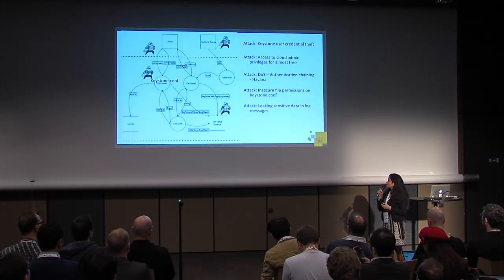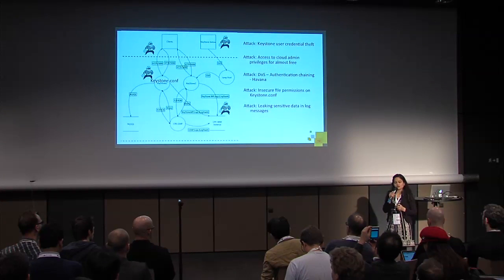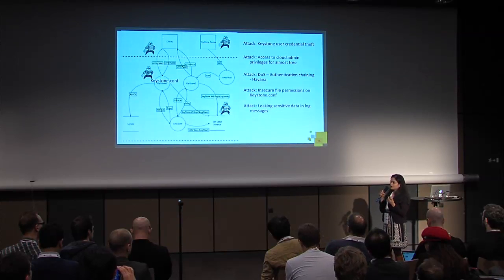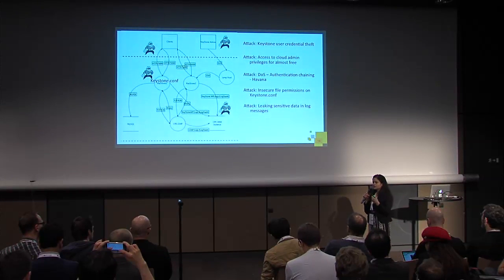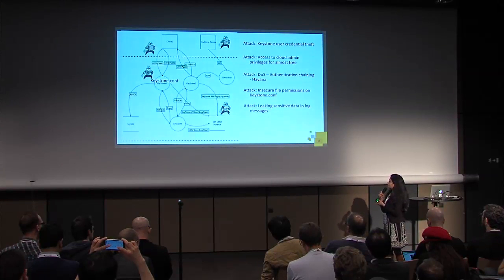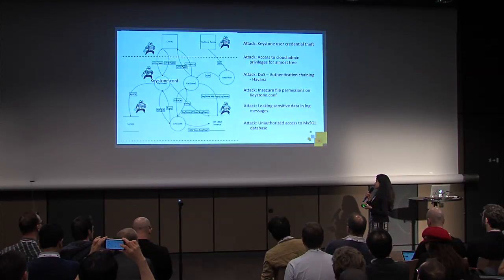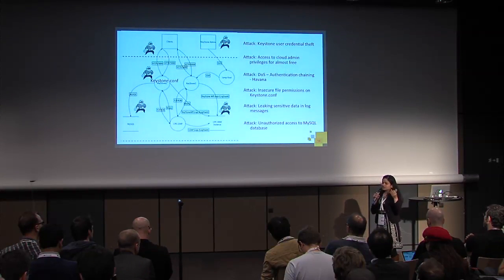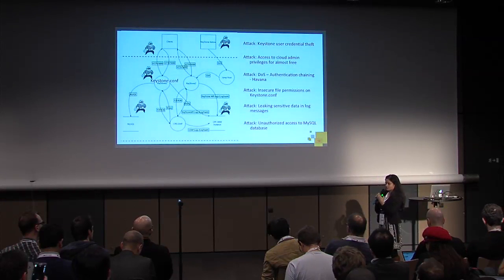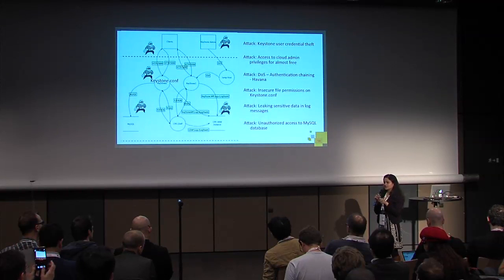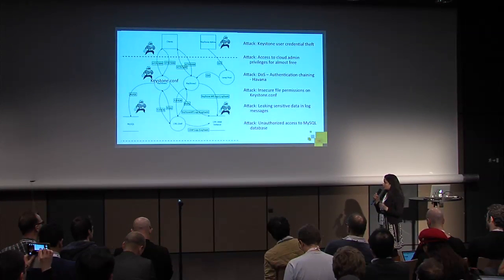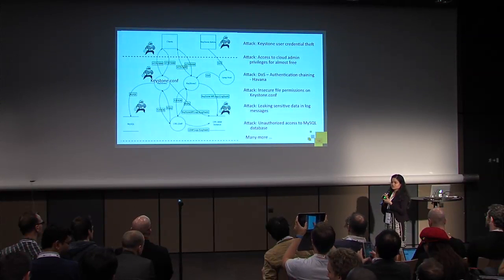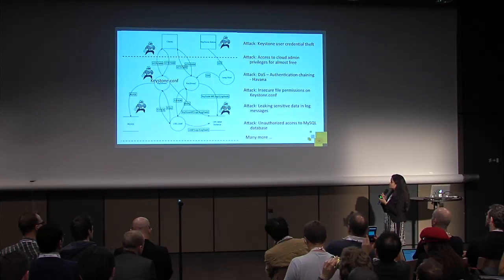We also found out about leaking sensitive information in our log files. We found out that usernames, passwords, and tokens were getting logged in plain text in our log files. And last but not least, there was unauthorized access to the MySQL server. If a malicious user could somehow get into the management network, they were able to get directly into the MySQL database and run malicious activities. We found out many more, but for this talk, let's go into each of these and see how we mitigated.